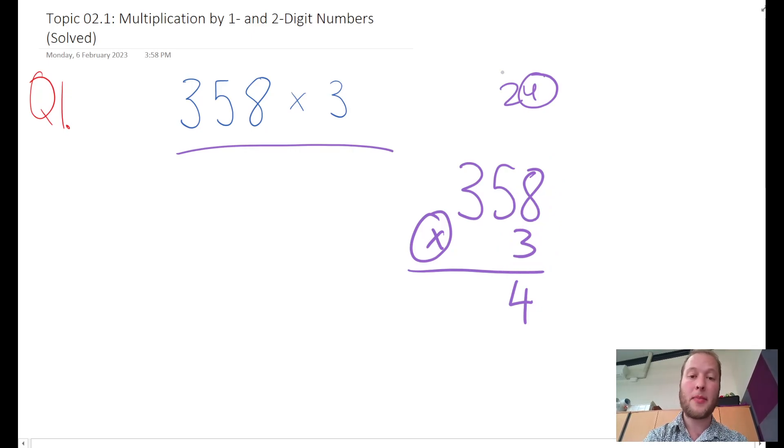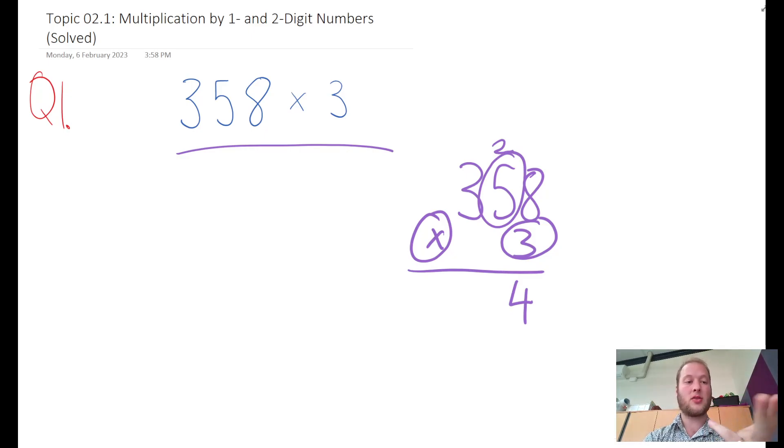Now I start again from the bottom right-hand corner, so 3 times 5 is 15. I can count by 5: 5, 10, 15. Then I add my remainder, so 15 plus 2 is 17. I put my 7 down here.